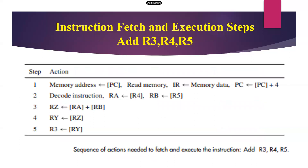The instruction fetch and execution step for ADD R3, R4, R5: if we consider this instruction, there are two source operands — R4 and R5 are the source operands — and R3 is the destination operand. There are five steps required to fetch and execute the instruction.